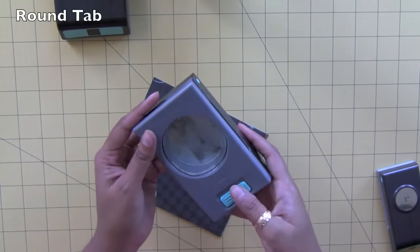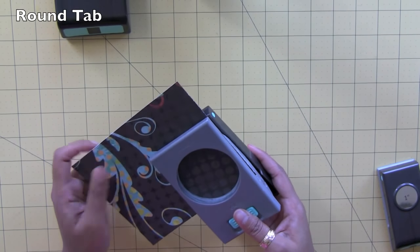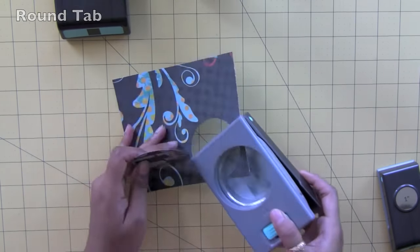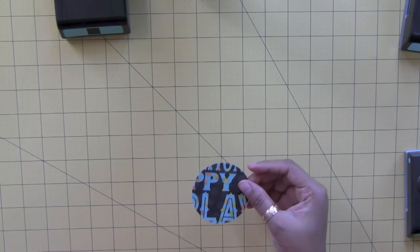For our round tab, I'm going to take a circle punch. This one is two and a half inches. It's from EK Success. I love their punches.